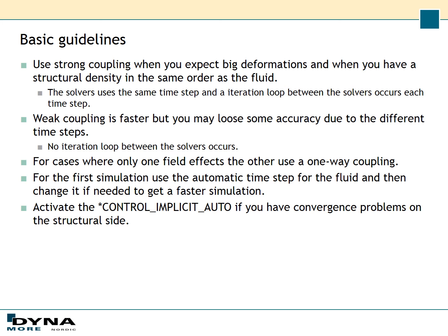For the first simulation, I recommend using the automatic time step for the fluid and then, once you've looked at the results, changing it to improve the simulation time — this gives you an idea of where to set your time step. If you have convergence trouble on the structural side, I recommend adding *CONTROL_IMPLICIT_AUTO, which activates the automatic time step for the implicit solver.